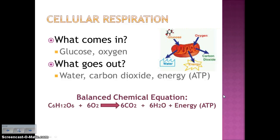What's coming in during cellular respiration — remember, this is opposite to photosynthesis — is glucose and oxygen. What's going out is water, carbon dioxide, and energy in the form of ATP. Use the diagram of the mitochondria to label what's going in and coming out, then write down the balanced chemical equation for cellular respiration: glucose plus oxygen yields carbon dioxide, water, and energy in the form of ATP.